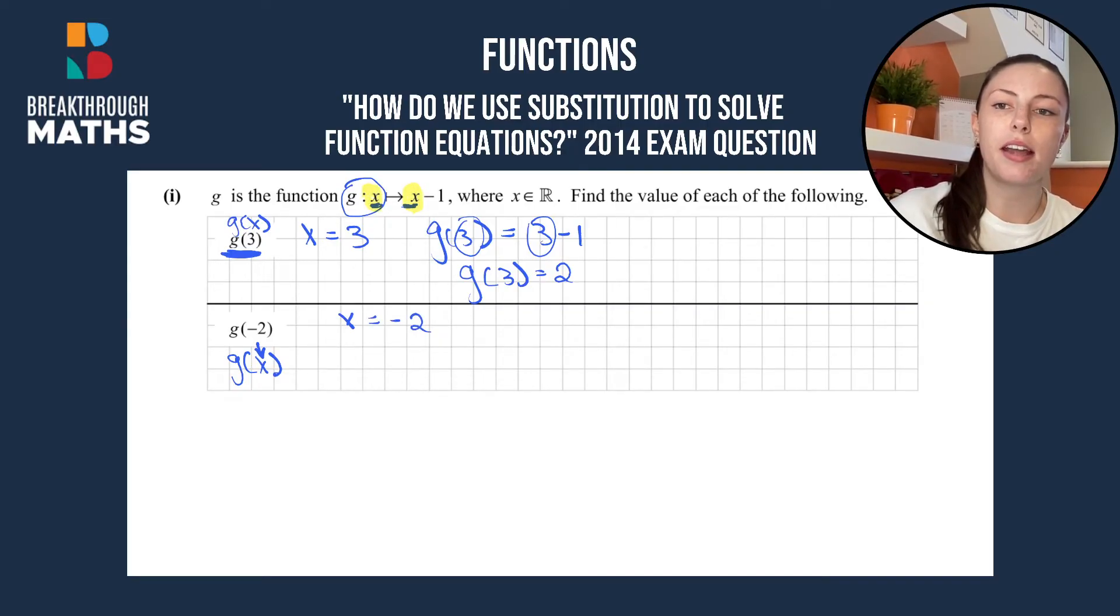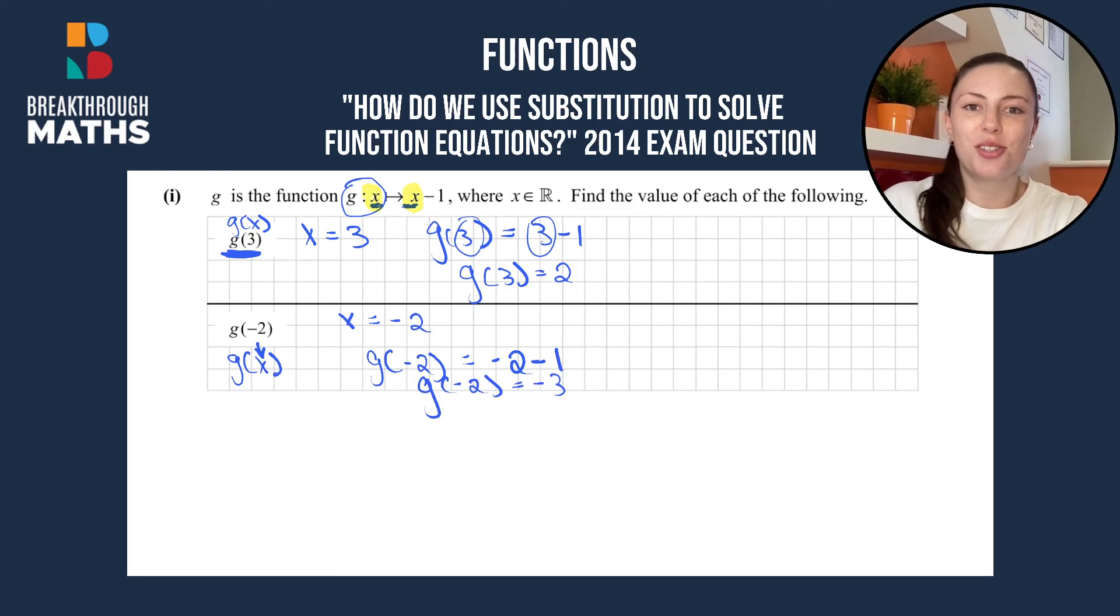Anywhere we had an x, we are now writing -2. So we have the g(-2) is going to be equal to -2 - 1. So the g(-2) is going to be equal to -3.